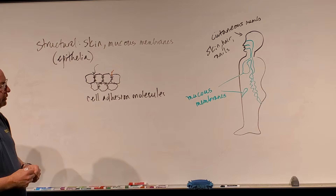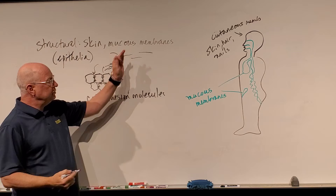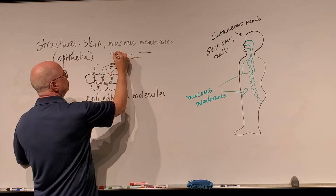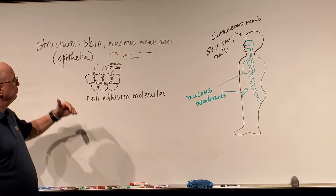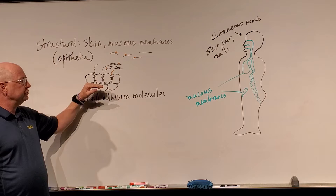Another thing that helps is that the outermost layer of epithelial cells can start to die and be shed or sloughed off. As we shed those cells, if there were bacteria on the surface, we would be shedding those bacteria too. So that also plays a role in our structural defense — the very tight joining of epithelial cells via adhesion molecules and the fact that we shed some epithelial cells.